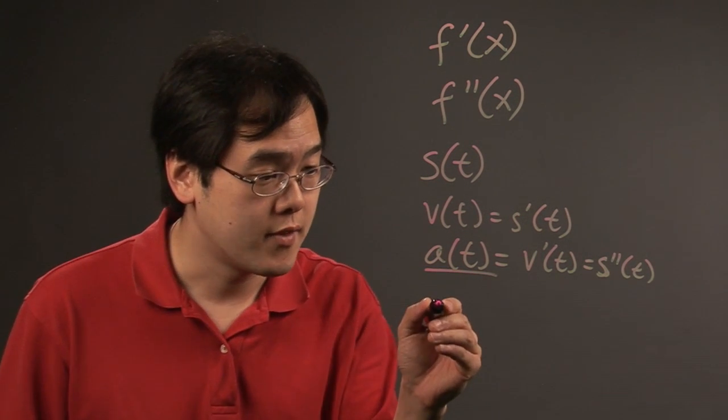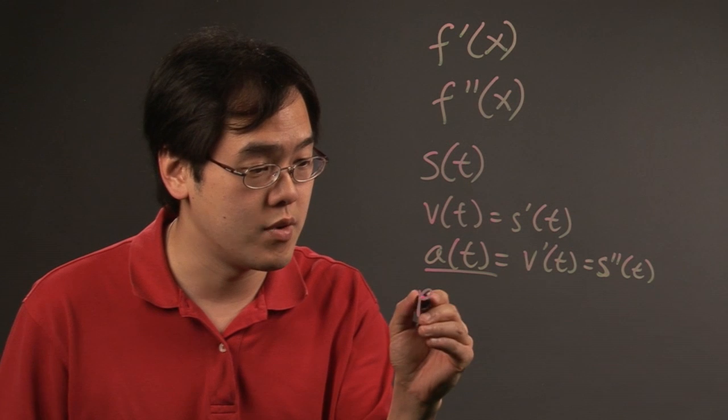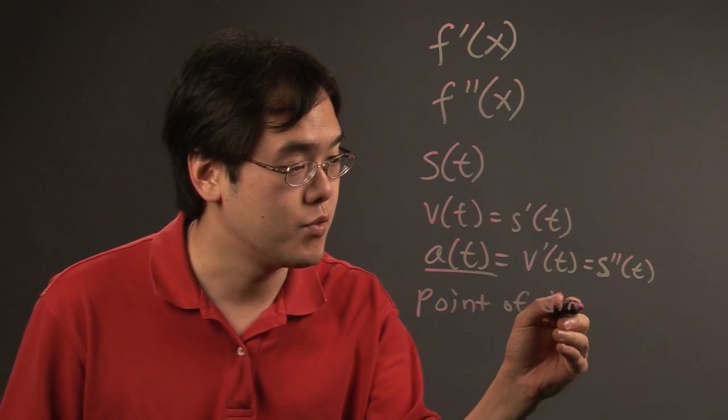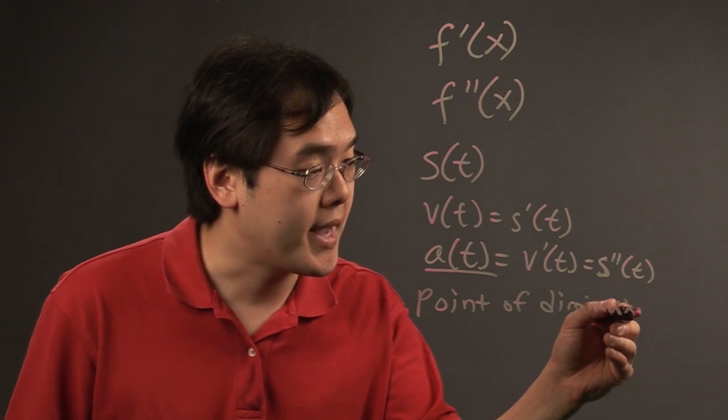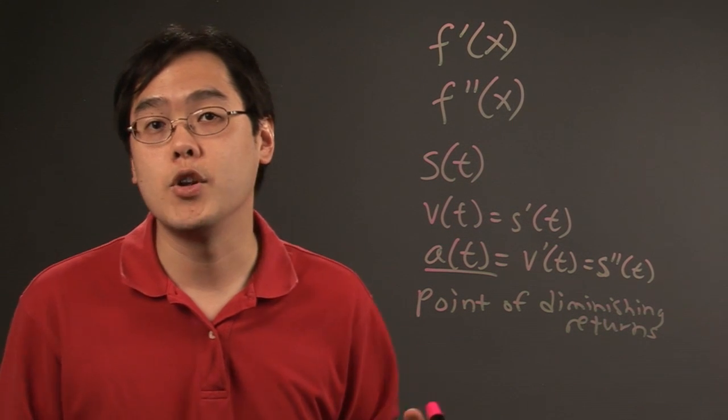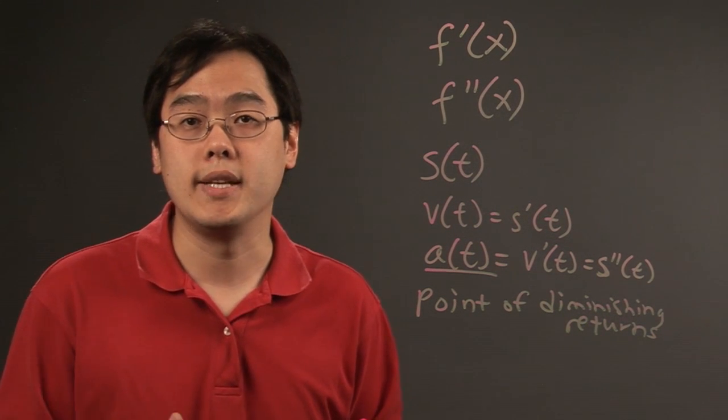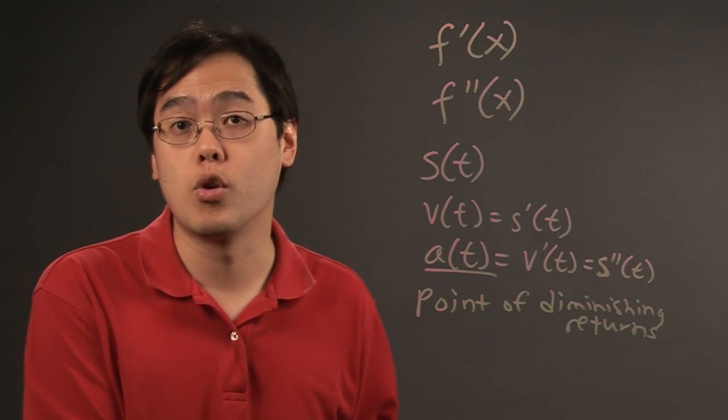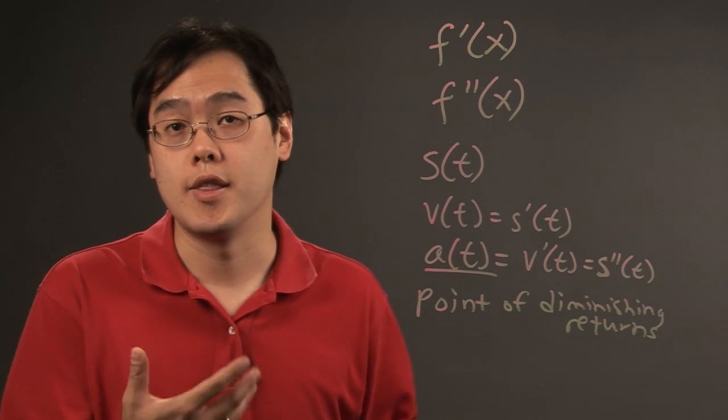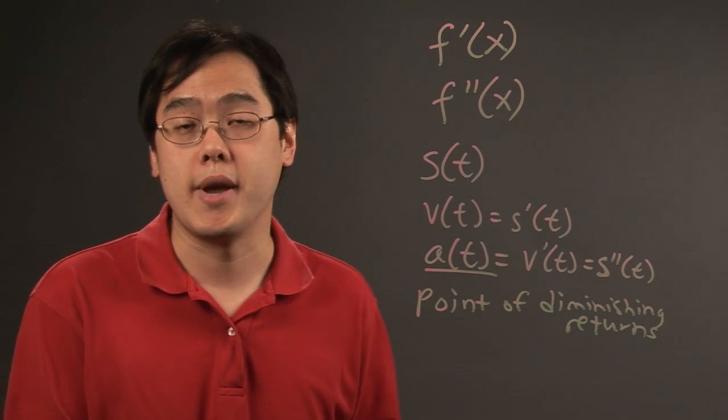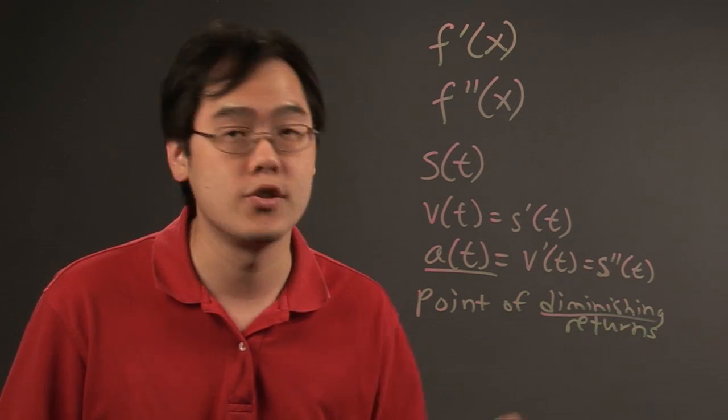Now in a business scenario, the second derivative can talk about the point of diminishing returns. What that means is you might want to explore the point at which your revenue or profit does not quite match prior years. In other words, you're still making money or profit, but the amount might not be as high as the year before, and that's why they call it diminishing returns.